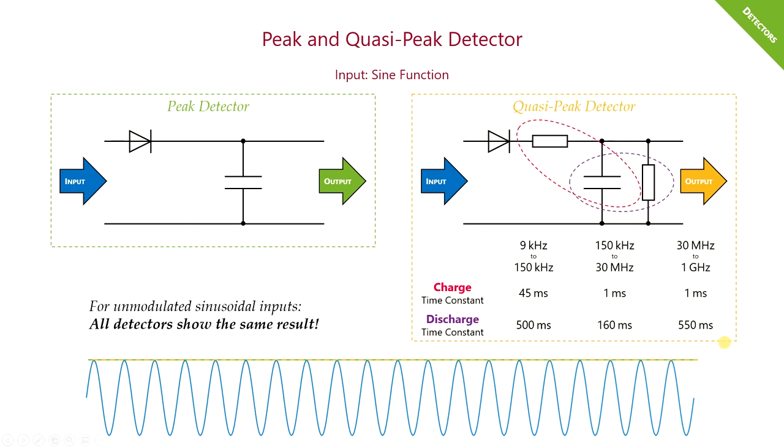Now, the EMI receiver needs to stay at least one time the charge and discharge time for each frequency step. This can result in very long measurement times. And for pure sinusoidal input signal, it does not matter what detector you choose. All will show the same result.